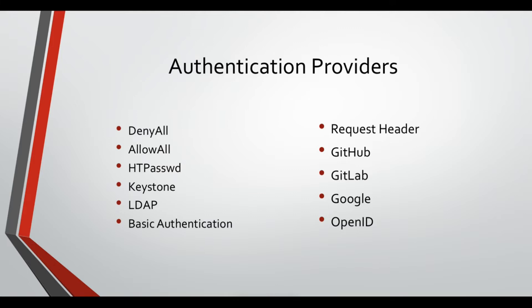Then you have basic authentication. Basic authentication is to let your environment authenticate against another server you have somewhere through HTTP requests. You can just have your login URL which is based on basic authentication in your server - a Tomcat server or something else - and use this to authenticate users to your OpenShift environment.